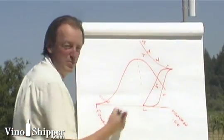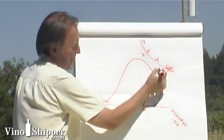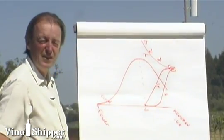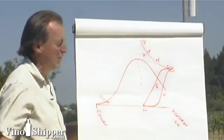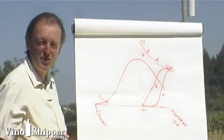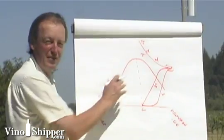And where these three things meet, the tannins, the flavour and the sugar, is when we want to harvest. Well unfortunately this is agriculture, we're not making washing machines here or motorbikes, this never happens.